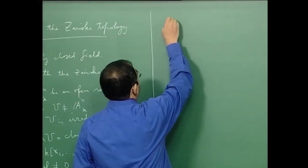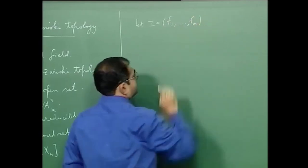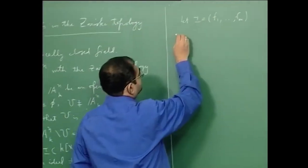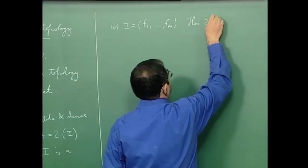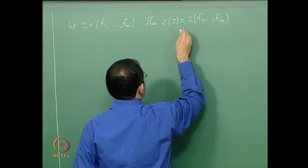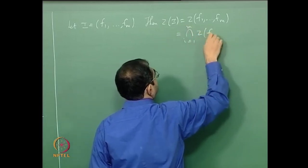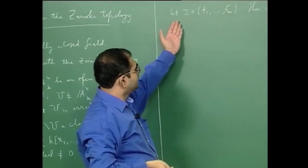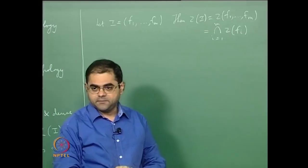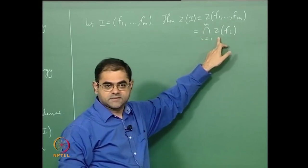Let I be generated by f_1 through f_m. Then Z(I) = Z(f_1, ..., f_m) = the intersection from i=1 to m of Z(f_i). So Z(I) is the set of points in affine space that are common zeros of each polynomial f_i for i running from 1 to m, and the common zero locus is obtained by taking the zero locus of each polynomial and intersecting them.